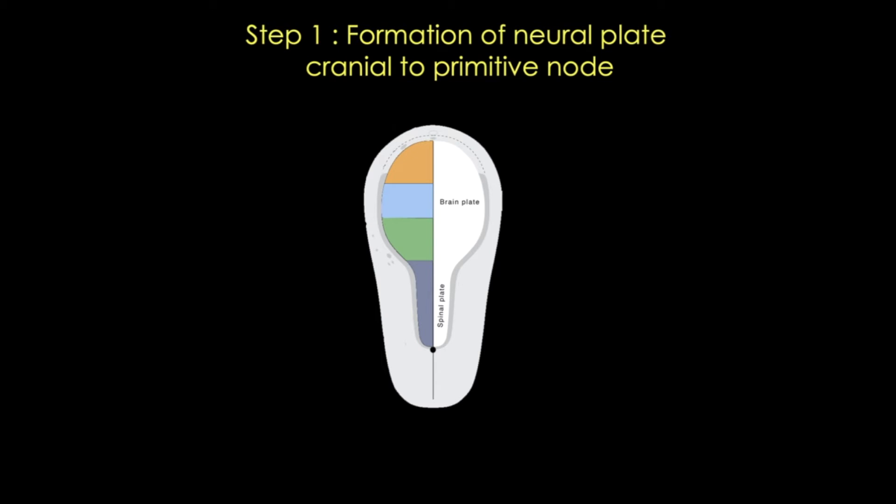The first indication of the developing CNS appears in week three as a plate of thickened ectoderm in the mid-dorsal or central region of the trilaminar embryo, which you can see in this cartoon. This region is called the neural plate.